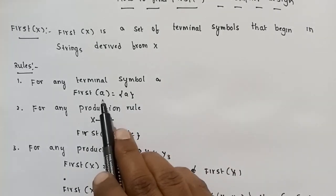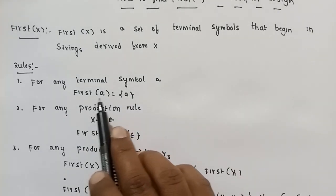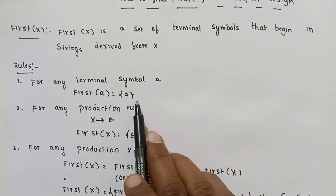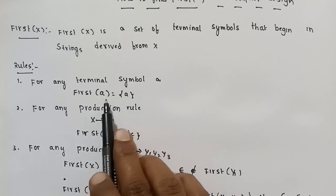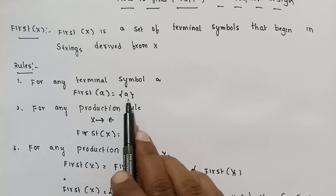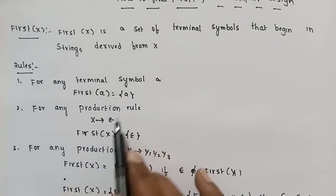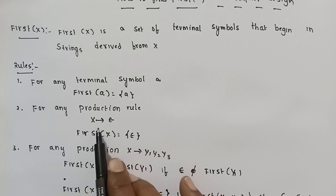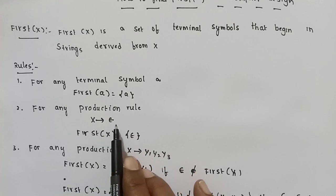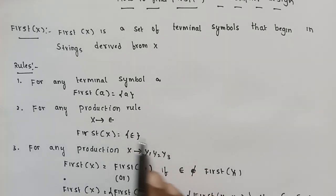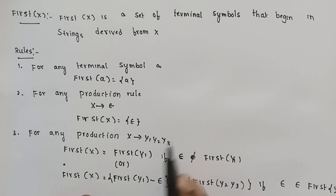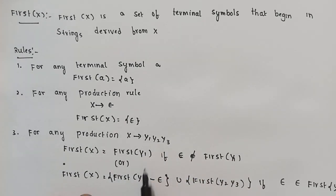First of X is a symbol. And then if X derives to Epsilon, First of X is equal to Epsilon. This is the third important rule.